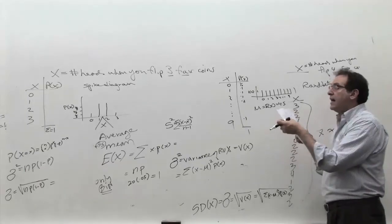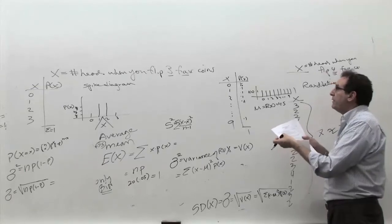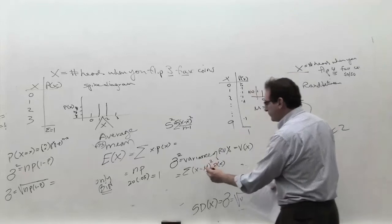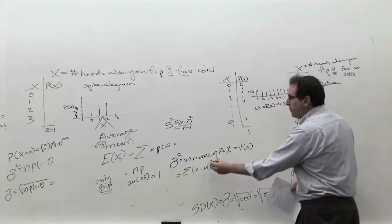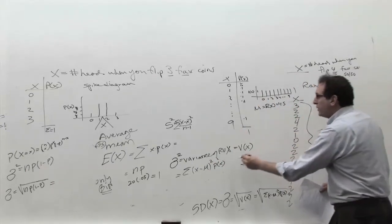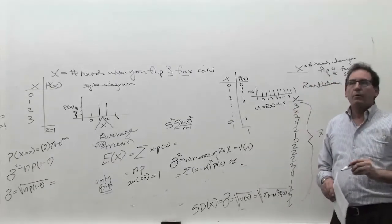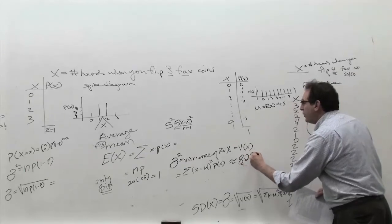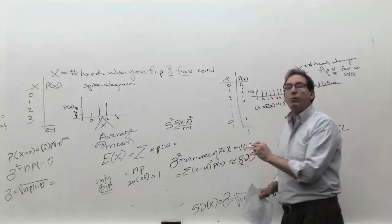The next part says calculate the variance of the random variable, which we did before. This is not binomial, so you can't use a shortcut. You've got to use the formula with the X's from zero through nine successively, the mu is always 4.5, and P of X is always 1 out of 10. The standard deviation is 2.87, and 2.87 squared is 8.25, so the answer for sigma squared should be 8.25.